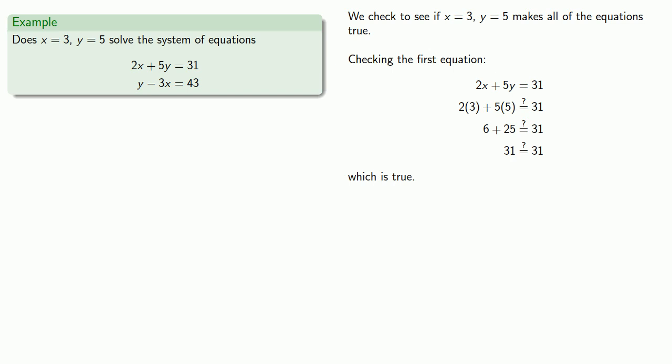And we do. So x equals 3, y equals 5 solves the equation 2x plus 5y equals 31.